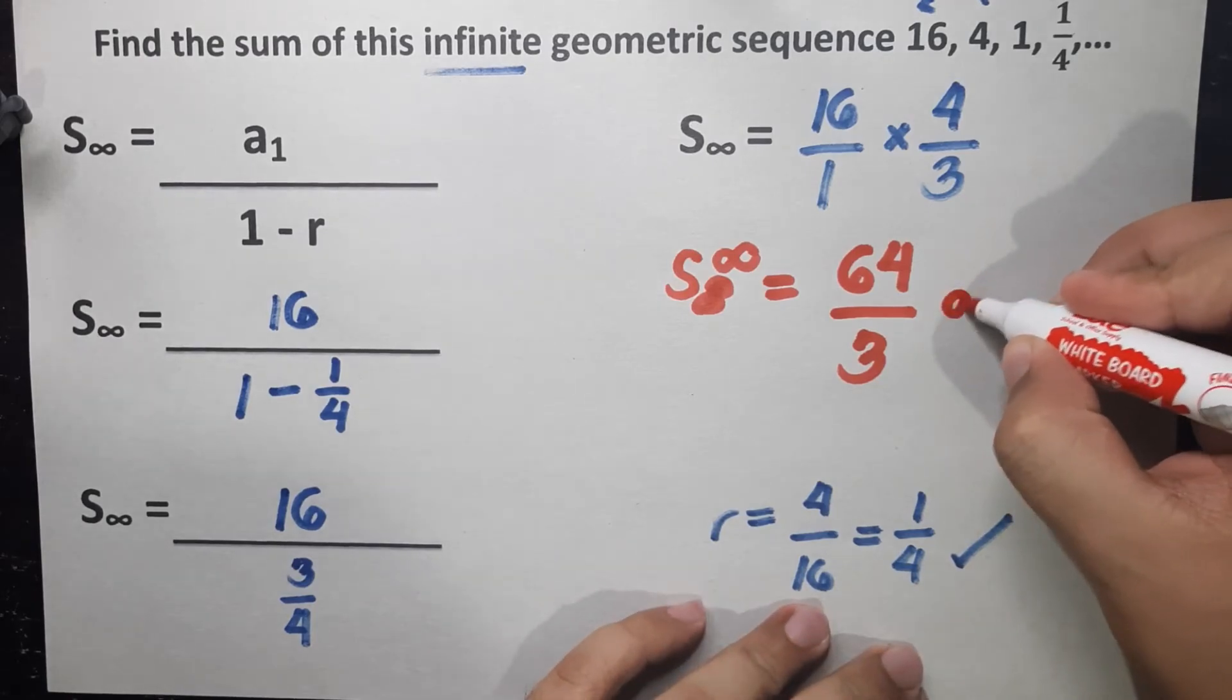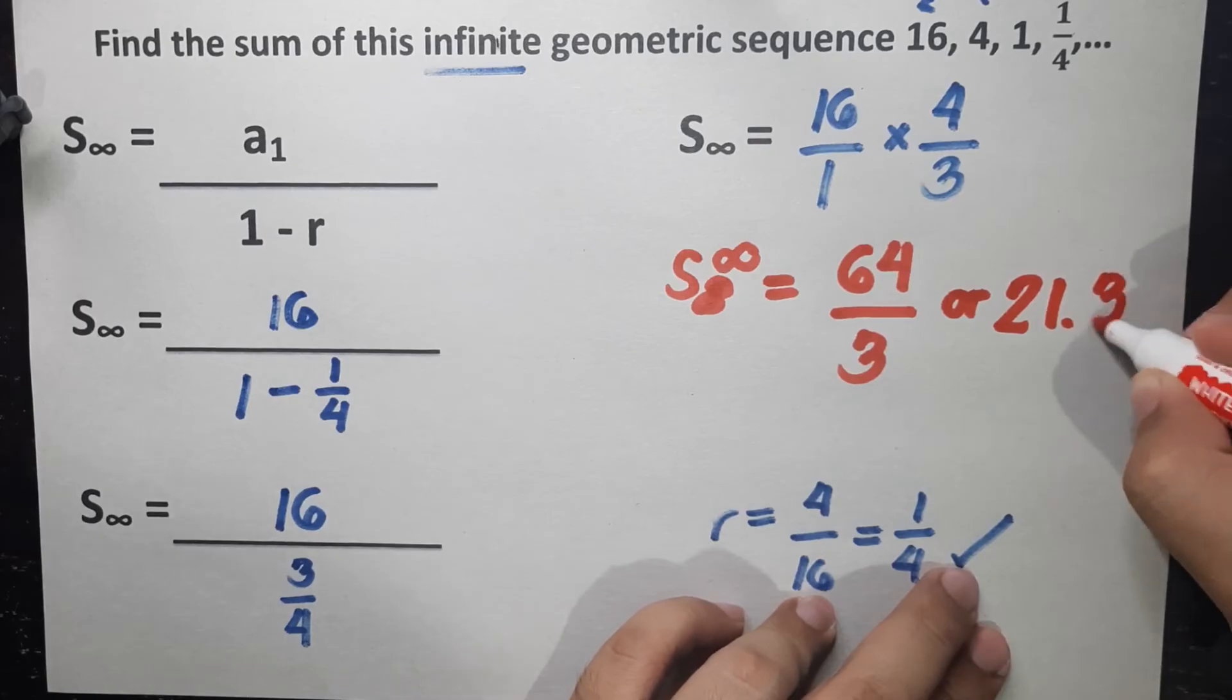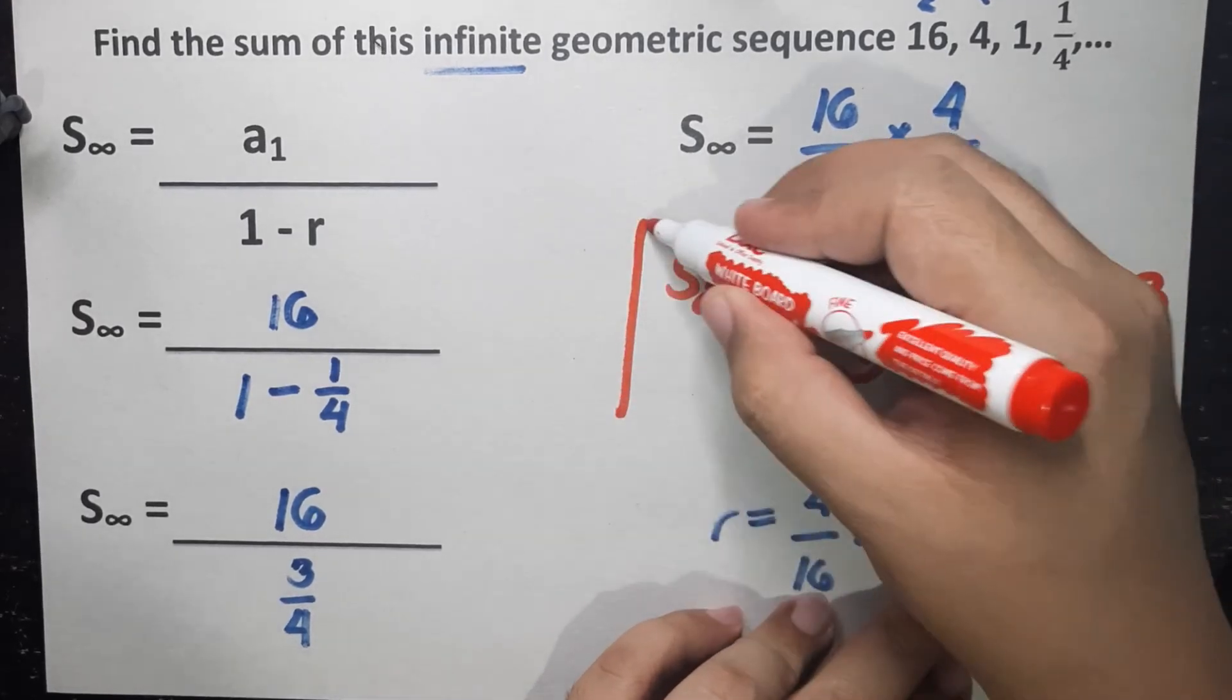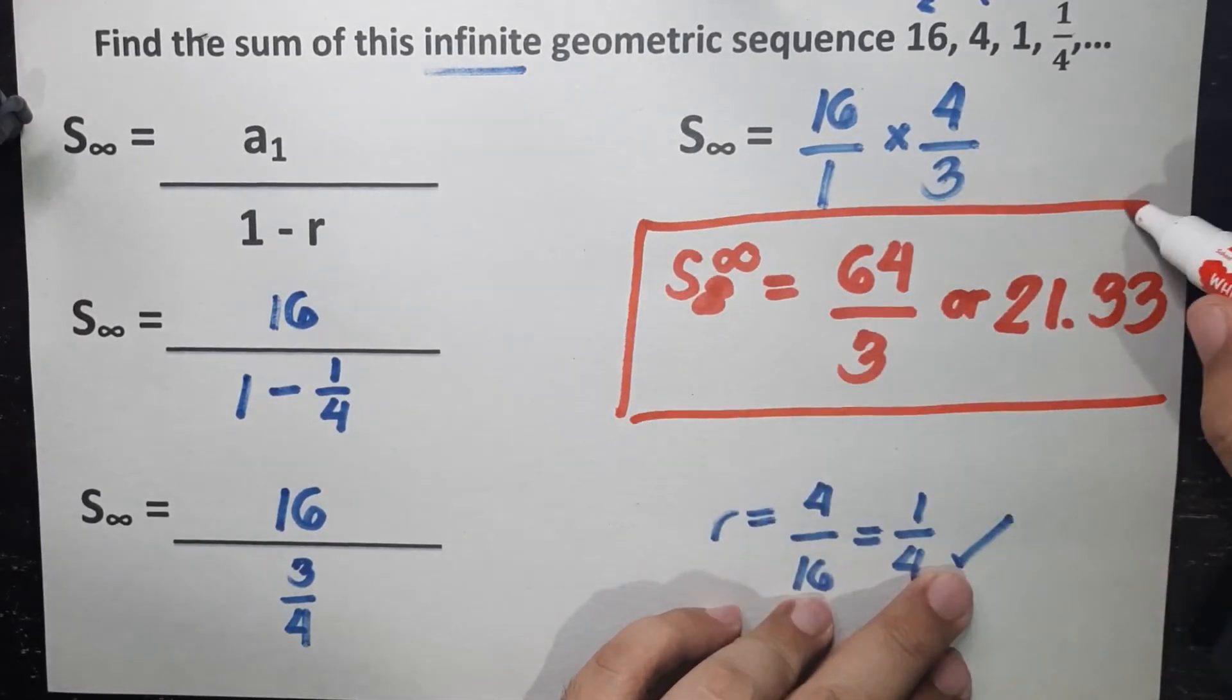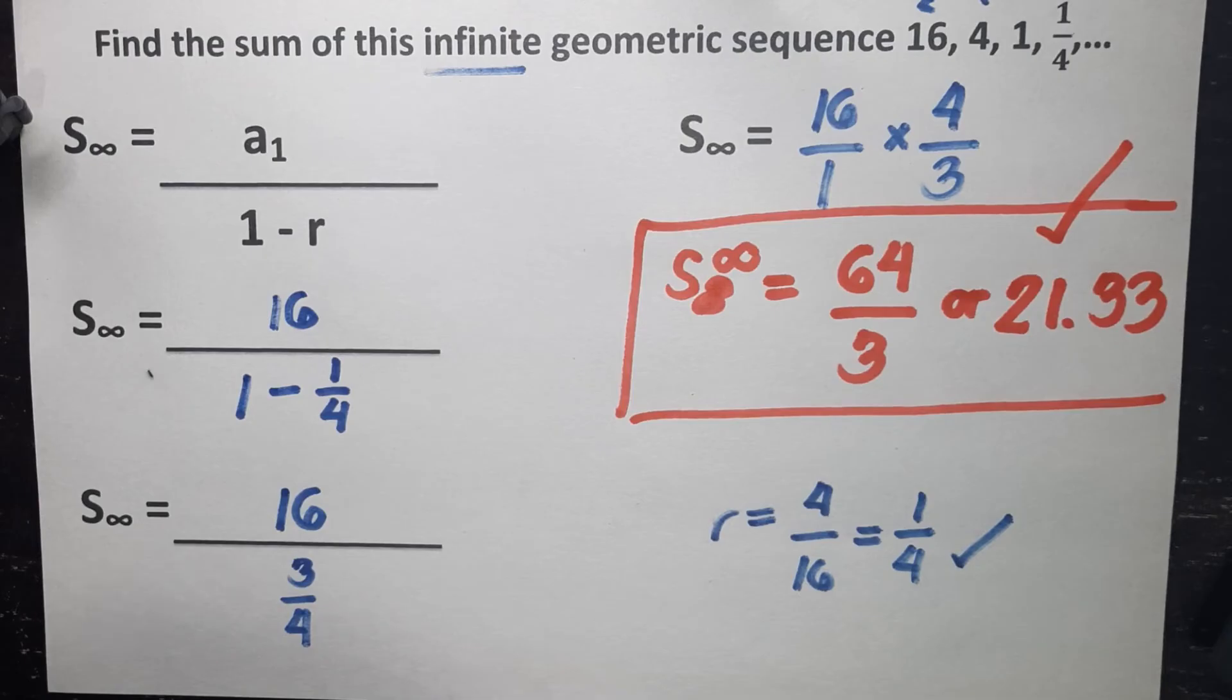64 over 3 or its decimal value, which is 21.33. Either way, still correct. 64 over 3 or 21.33. Now let's proceed to our last example.